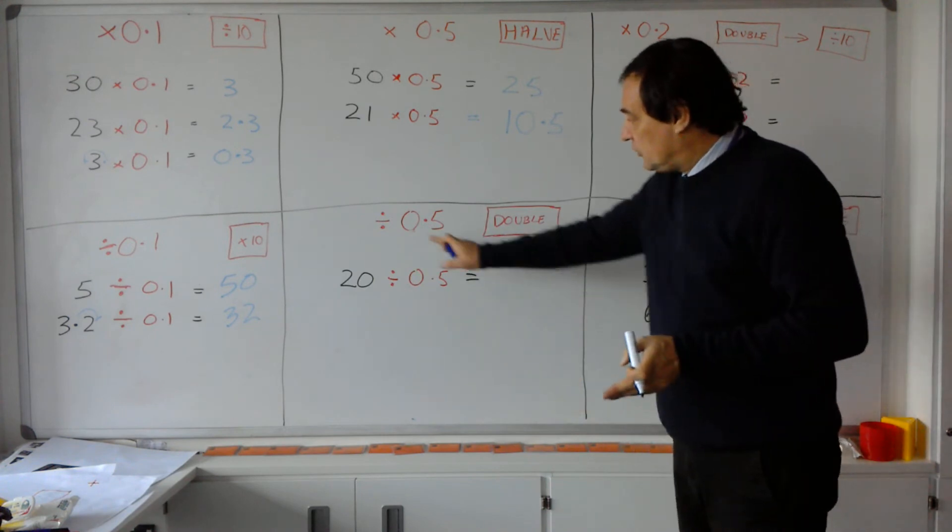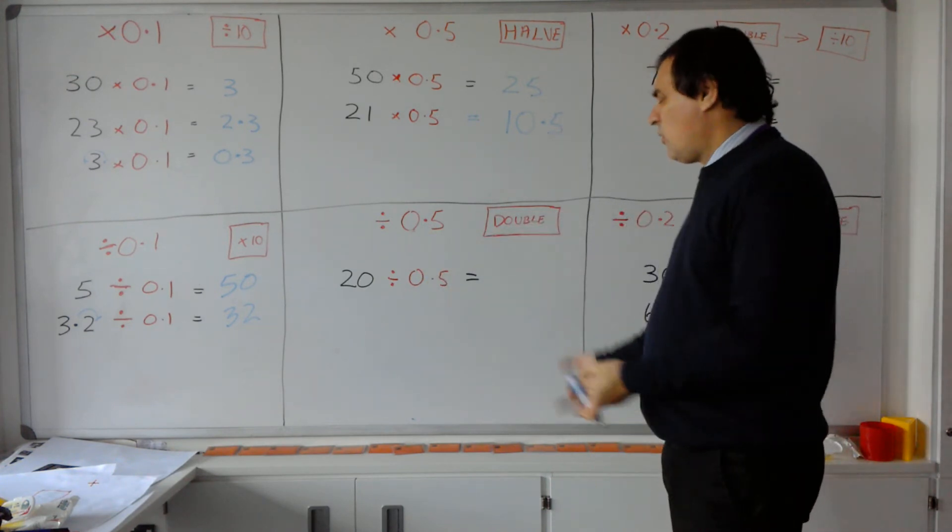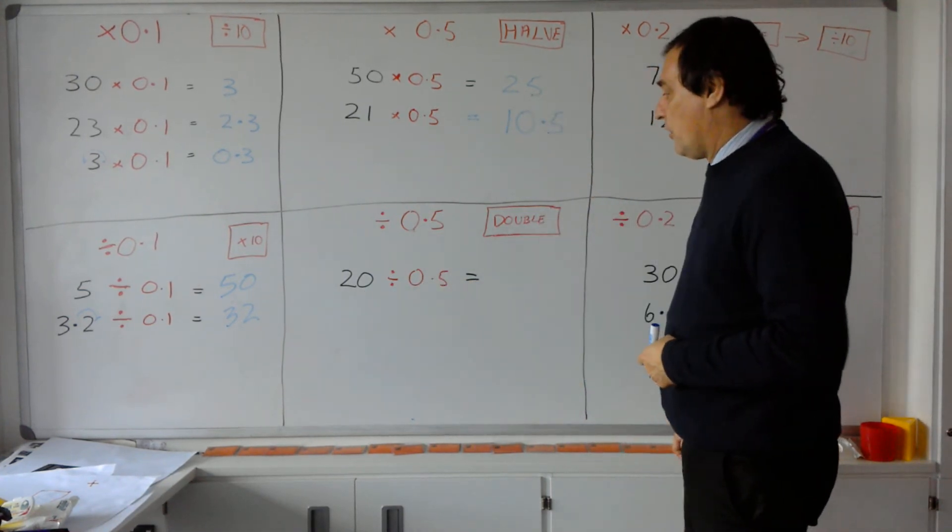Going the other way again, if you're dividing by 0.5, all it means is you're doubling the number. We'll only do one of these because we all know how to double things. So 20 divided by 0.5 is the same as double 20 or 20 times 2, which is 40.